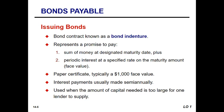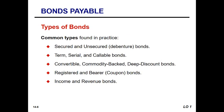Now we're going to talk about the different types of bonds. There are a variety of bond types that can be issued, and I'll give you a bit of additional information about each. Starting at the top: secured bonds have a claim to a specific asset attached to them, making them less risky than unsecured or debenture bonds, which are based only on the credit worthiness of the issuing organization.